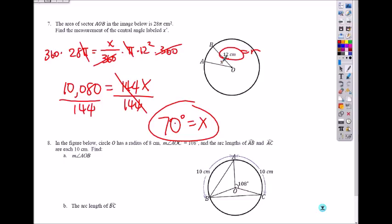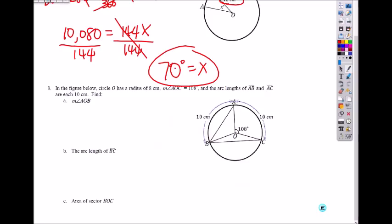Number eight. In the figure below, circle O has a radius of 8. This is 8, 8, 8, the radius. And measurement of AOC.